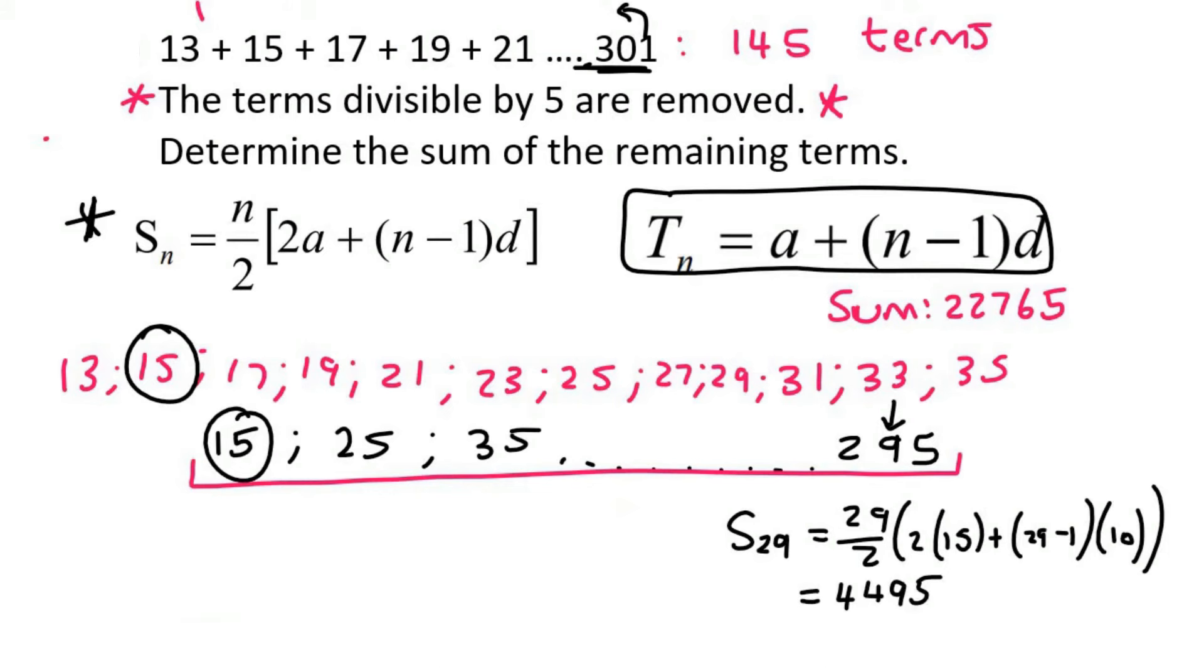All right, so here's where it all comes together. When we added up all of these terms, we got 22,765. We then looked at all the numbers that are divisible by 5, added them together, and got 4,495. So the question says, determine the sum of the remaining terms if you take away the divisible by 5s. Well, you would end up with, I'm going to say sum of remaining...